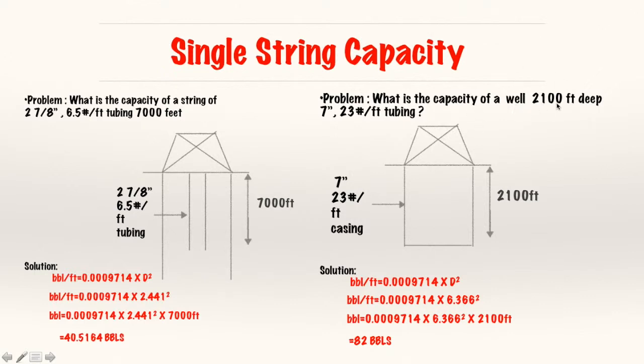So the capacity of a well, 2,100 feet deep, 7 inch, 23 pound per foot tubing or casing, right? Let's go with casing. So well depth of 2,100 feet. So it's barrel per foot factor, like what we did in the same question, remember I always take the inner diameter, inner diameter 6.362 squared, and multiply that out, I get my answer in barrels. So very straightforward, very simple. So it shouldn't give you a headache because it's just basically almost similar to the cylindrical formula question. The only thing that's taken into consideration is this is in inches and my answer is in barrel per foot.